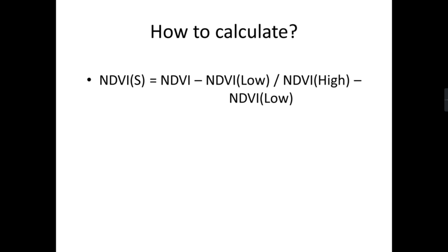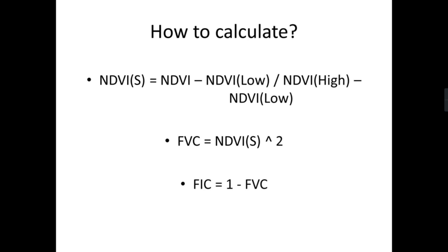Then we compute the fraction vegetation cover from NDVI_S — it is simply the square of the NDVI_S variable, giving us the fraction vegetation cover (FVC). After that, we generate the fraction impervious surface, which is 1 minus FVC. We subtract the FVC image from 1, which gives us the final output.